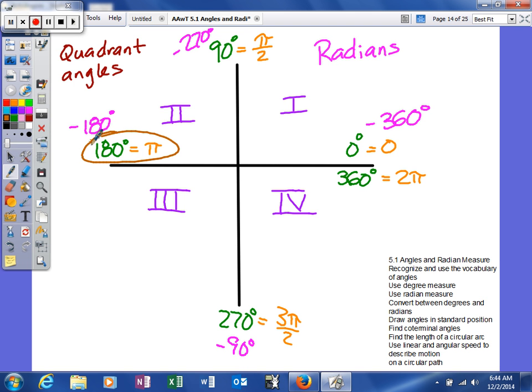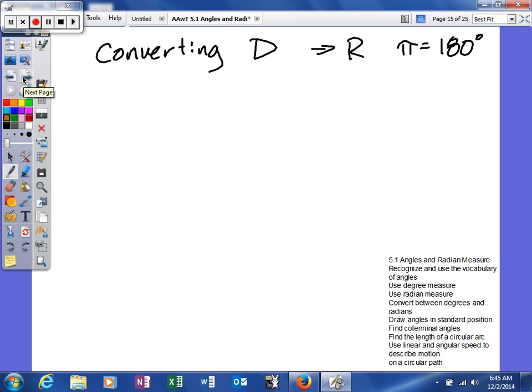Because what we're going to do is, if we use 360 and 2 pi, we can simplify that fraction. So let's see if we can't use that. Converting, what we're going to do is we're going to go from degrees to radians, so remember pi is equal to 180 are going to be the values we're going to use for our conversion factor.